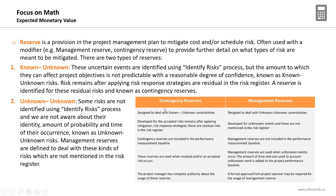Comparing the two types: contingency reserves are designed to deal with known unknowns and are developed for accepted/residual risks in the risk register. They are part of the performance measurement baseline (cost baseline). The project manager has complete authority over contingency reserves. Management reserves are designed for unknown unknowns — unforeseen events not in the risk register. They are NOT part of the cost baseline, and using them requires formal approval from the project sponsor.